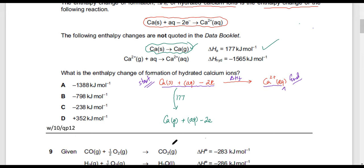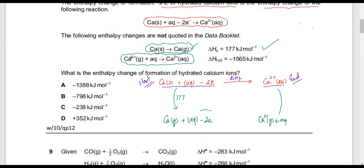Now I need to repeat the same steps and reach the other point. Let's look at the second reaction given. In this reaction, calcium 2+ aqueous is being formed — but it's being formed from calcium 2+ gas. So calcium 2+ gas plus aqueous get together to form calcium 2+ aqueous, and this enthalpy change is given as minus 1565 kJ/mol. I've connected this second reaction as well.